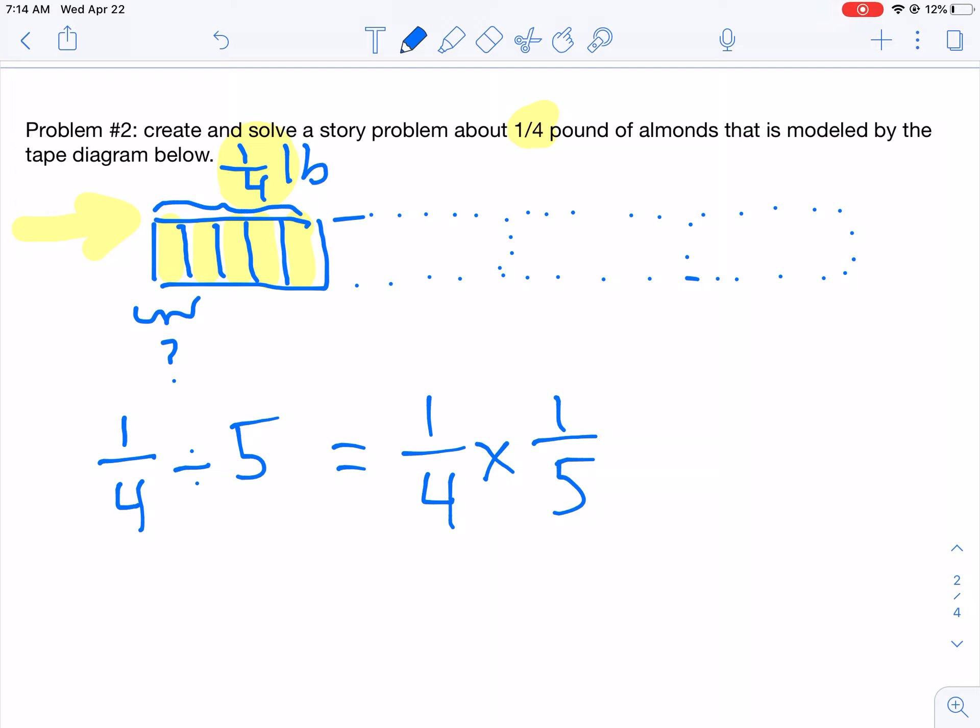She wanted snacks of almonds for five days from Monday through Friday. So from that quarter pound of almonds, she wanted it separated equally into little baggies of almond snacks that she could take to work for each day of the week. So how many pounds of almonds were in each bag?